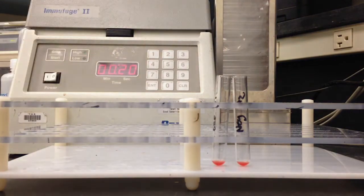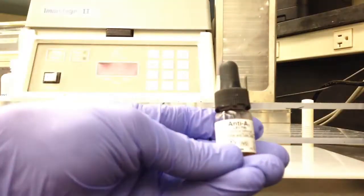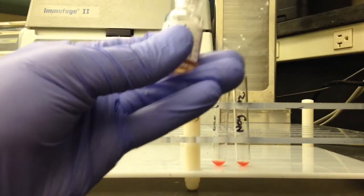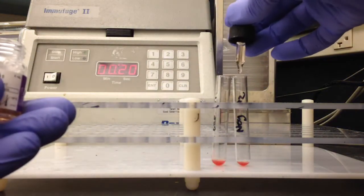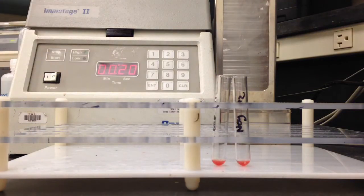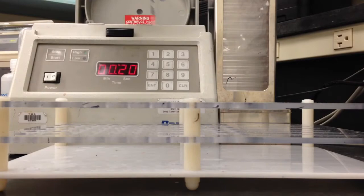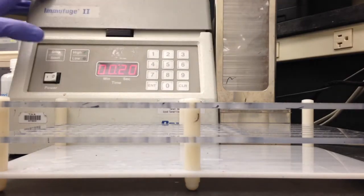So you need to label your tubes, then add one drop of A1 and A2 cells to the corresponding tubes, and then follow that up with a drop of A1 lectin. After you add the A1 lectin you would just mix the specimen and pop them in the centrifuge for about 20 seconds and spin them down.